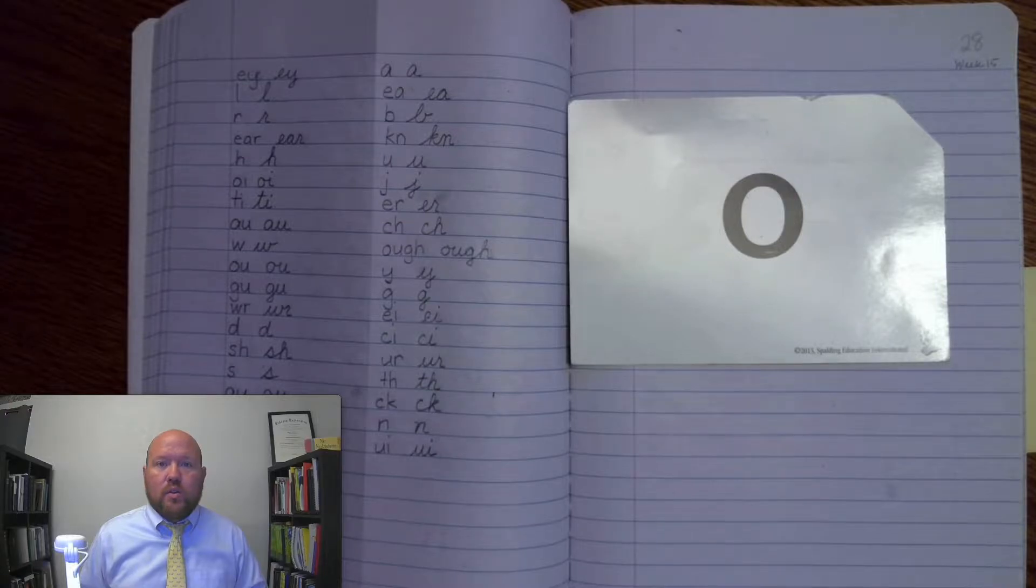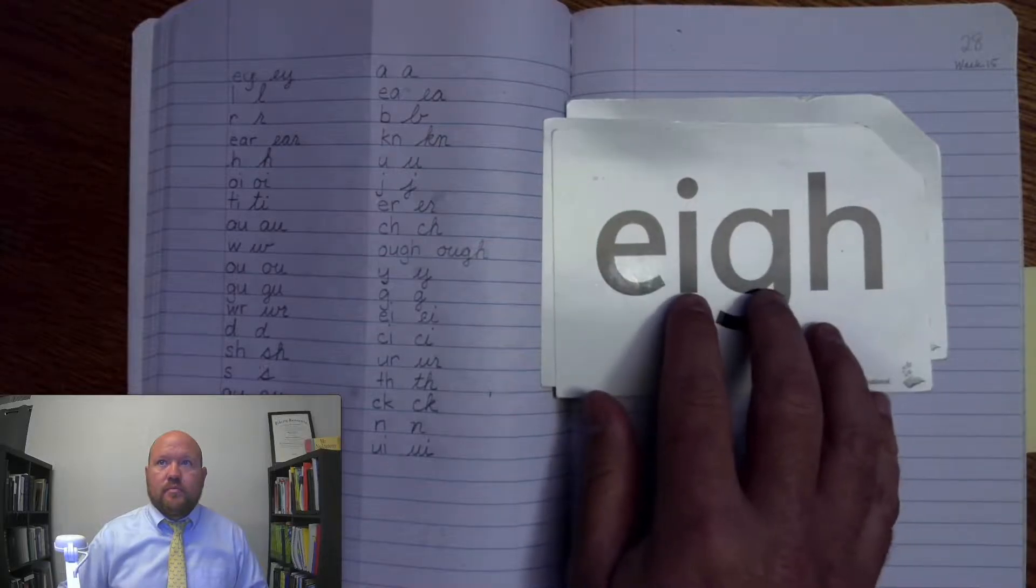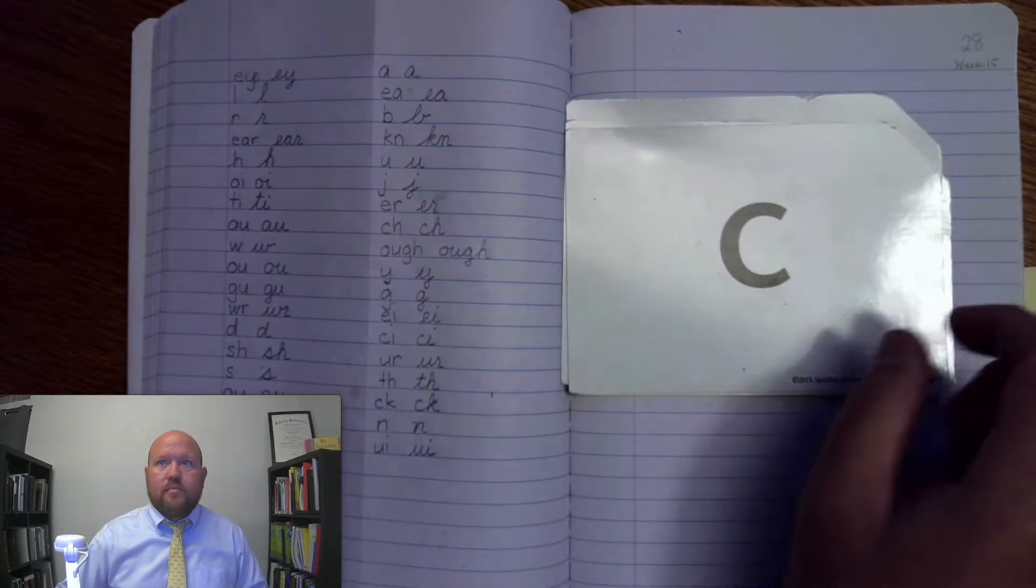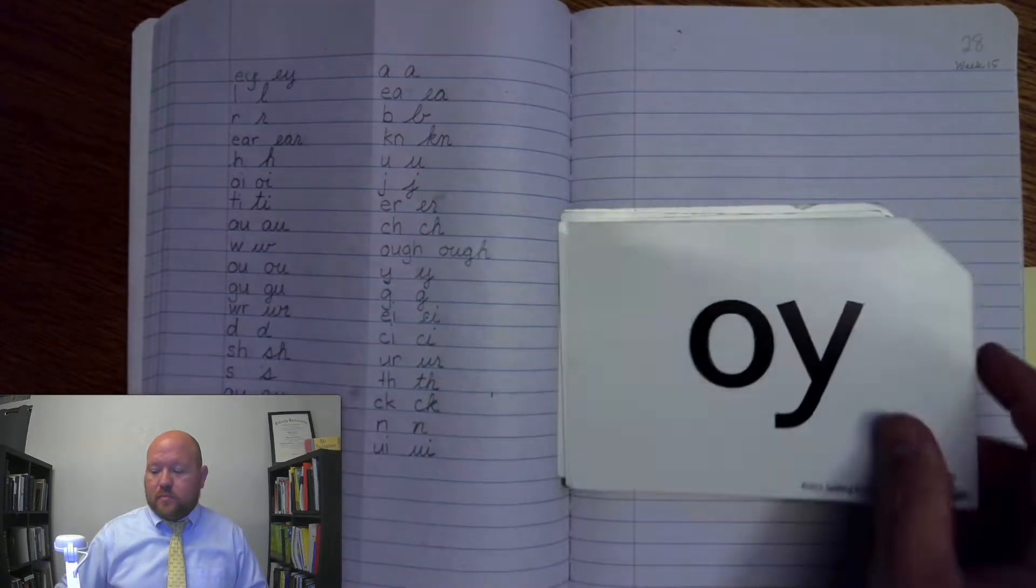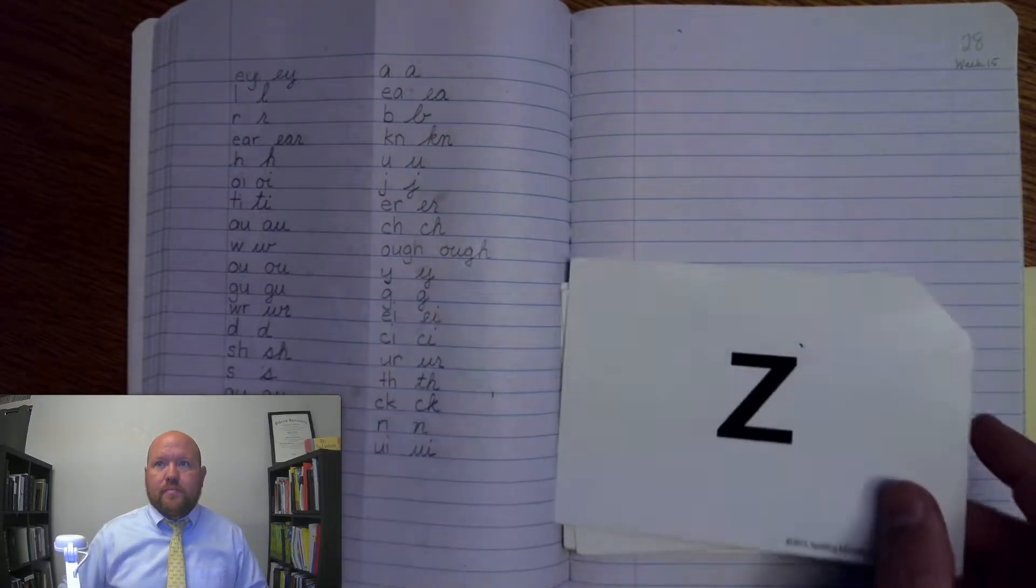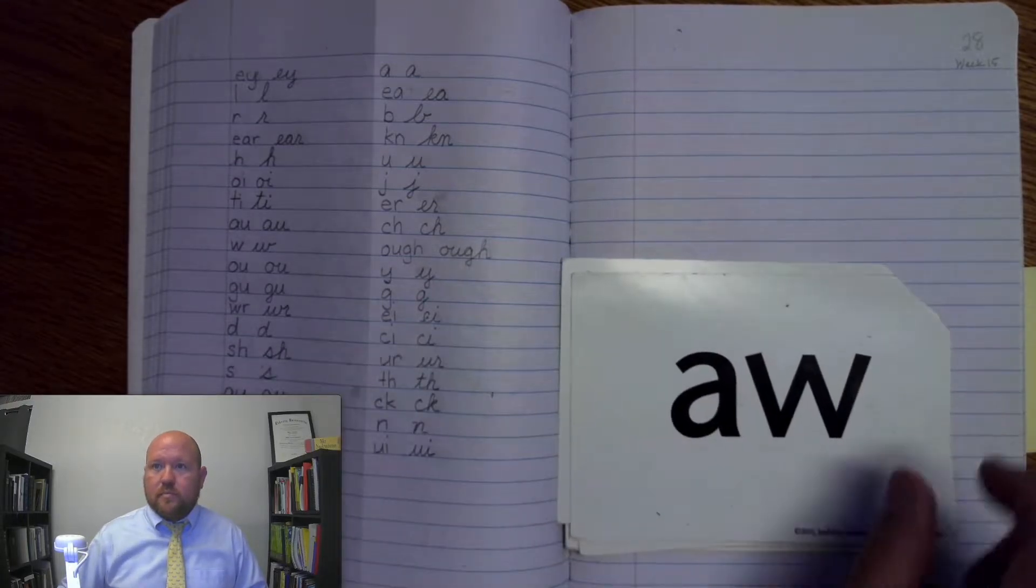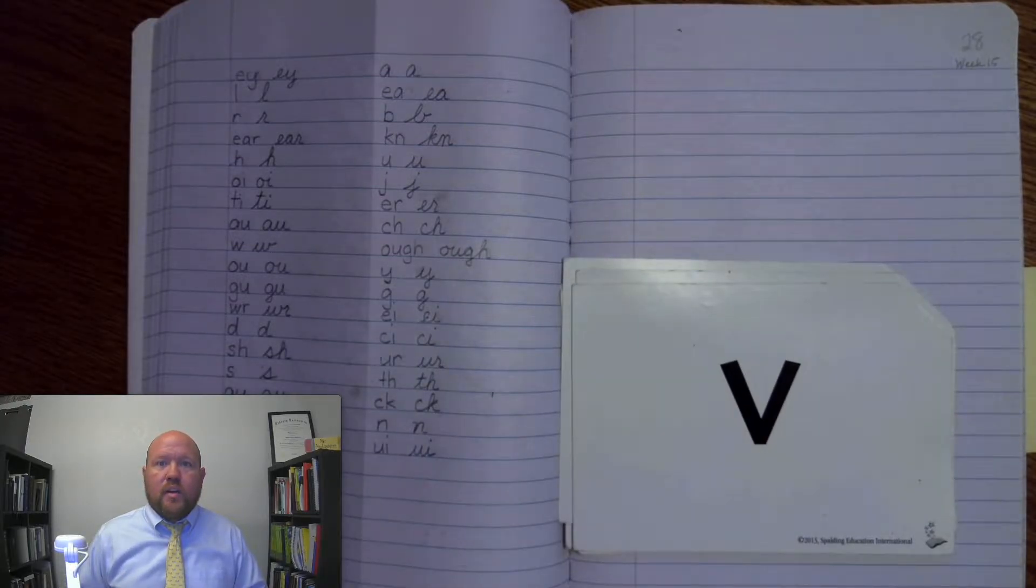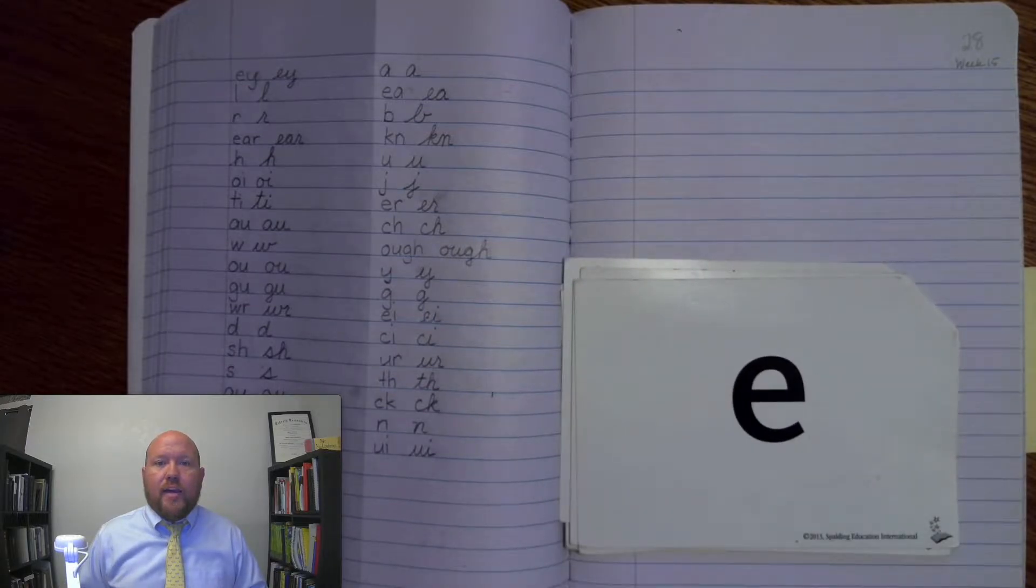We're going to begin by going over just the sounds. Try to say the sound before I do to see if you get it right. Here we go. Ah, oh, oo. Juh. Ay. Kuh, ts. Oye. Z. Ah. V. Eh, ee.